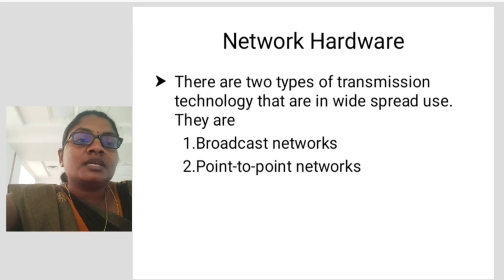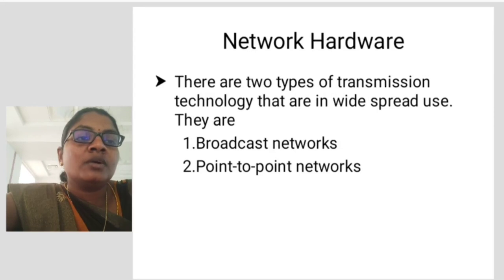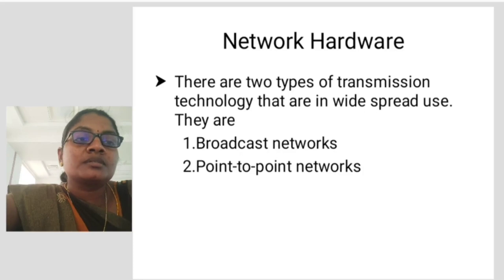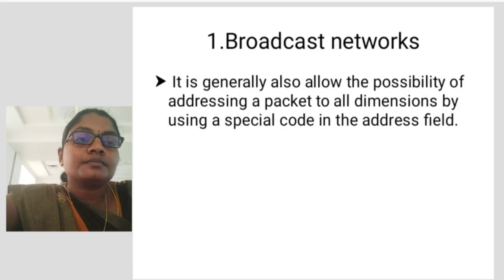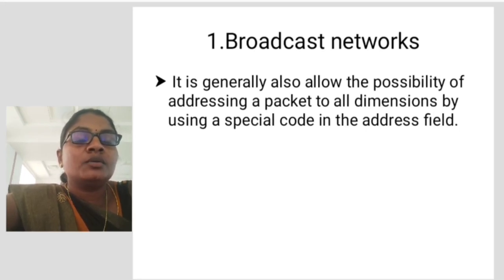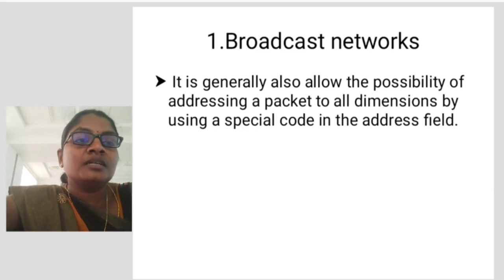Next one is Network Hardware. There are two types of transmission technology that are in widespread use: Broadcast Networks and Point-to-Point Networks. Broadcast Networks generally also allow the possibility of addressing a packet to all destinations by using a special code in the address field.